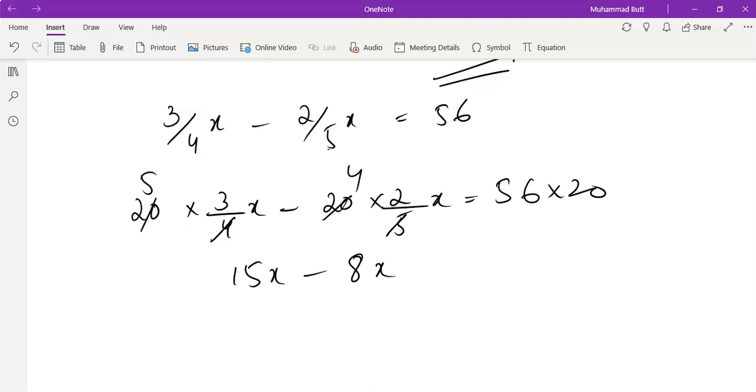15x minus 8x equals to 1120. 7x equals to 1120. So when x is equal to 1120 divided by 7, that is 7 into 42 and 0.